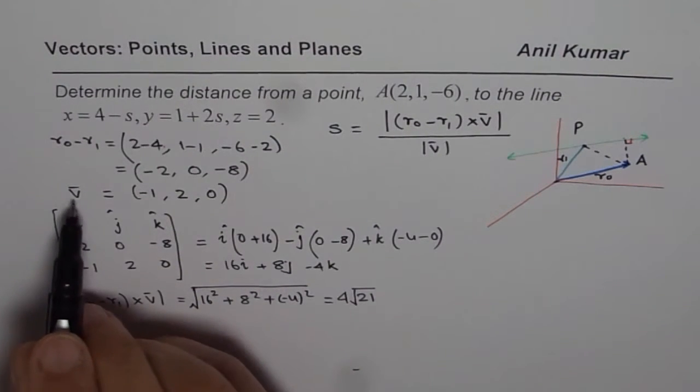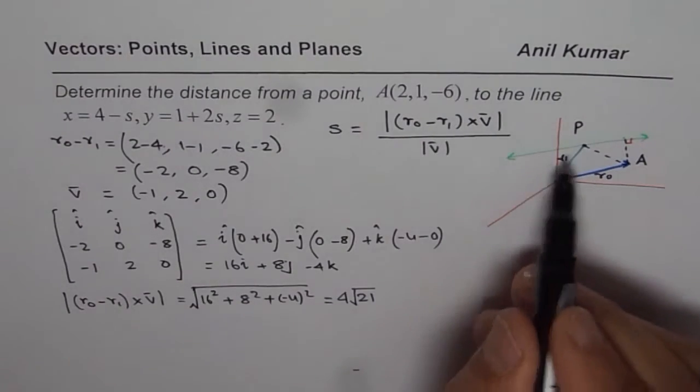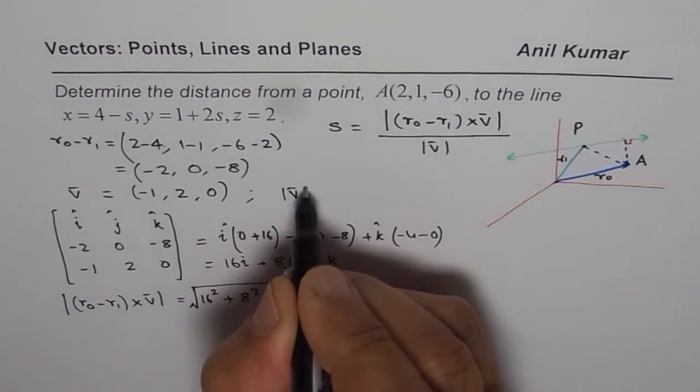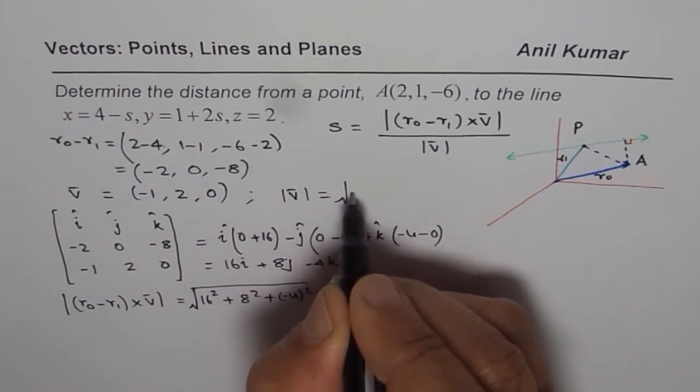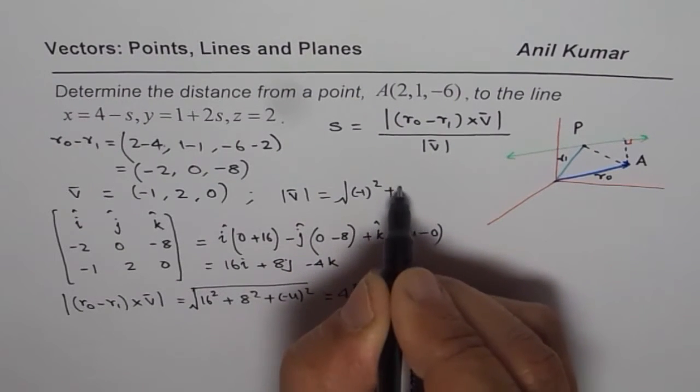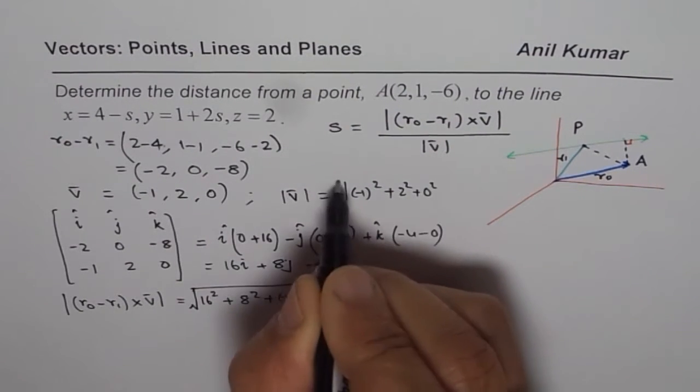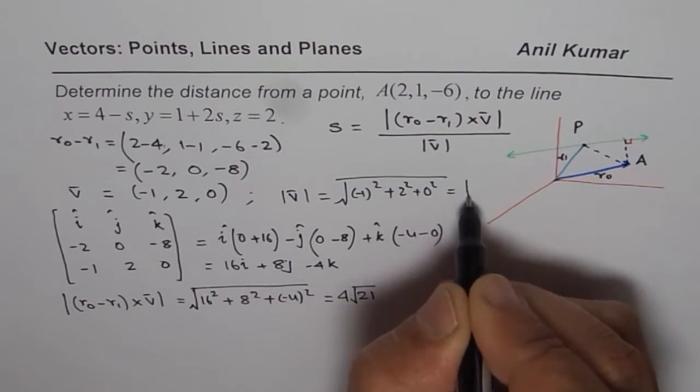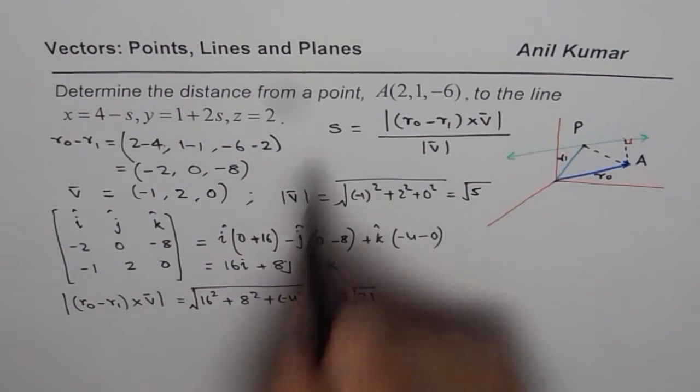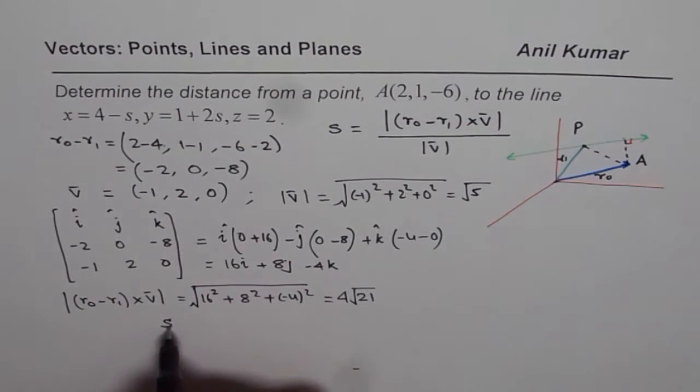Now, we have vector, direction of the line. Let us also find the magnitude of this here, which is square root of minus 1 square plus 2 square plus 0 square, √5. So now we can write down what the distance is. Between them, the distance is 4√21 divided by √5.